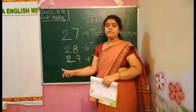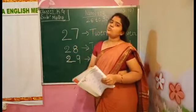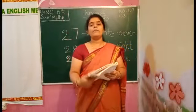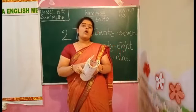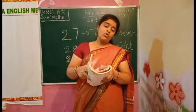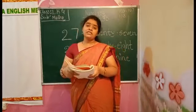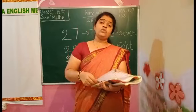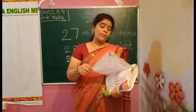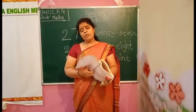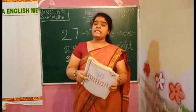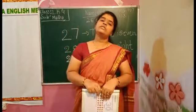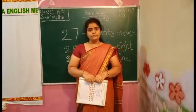After 28, which number will we get? That is 29. In your test book, once again they are given balls. We have to count those balls and observe which number we will get. You have to tell your parents how many balls are there. Below, once again, you have to trace those numbers. After tracing 2 and 9, you have to say 29.